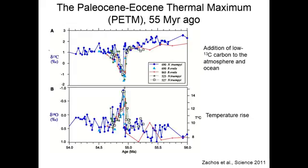Shown above is the carbon isotopic composition of those same shells — the standard normalized carbon-13 to carbon-12 ratio. We see that relative to the standard, the shells get much more negative at the same time that this warming occurs. This is consistent with the addition of carbon from an isotopically distinct reservoir into the ocean and atmosphere system.